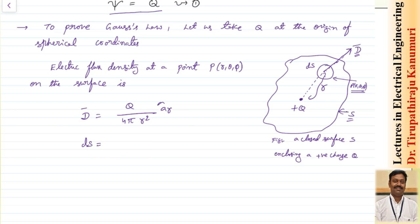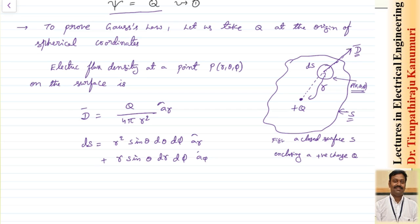Now, the differential surface element in spherical coordinates is obtained by keeping one coordinate constant. It is r² sinθ dθ dφ in the direction of a_r, plus r sinθ dr dφ in the direction of a_φ, plus r dr dθ in the direction of a_φ. The derivation of these expressions is covered in a previous lecture on spherical coordinate systems.